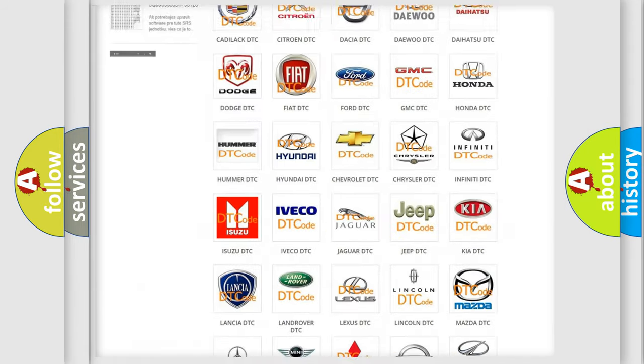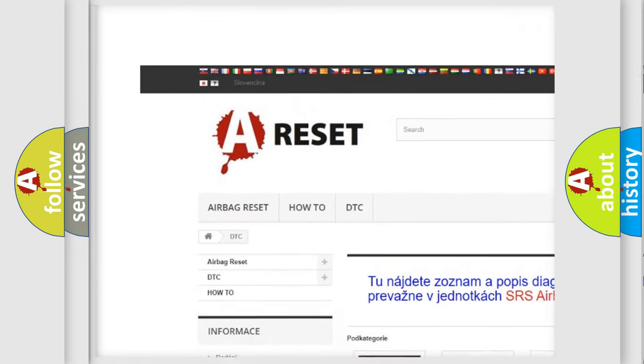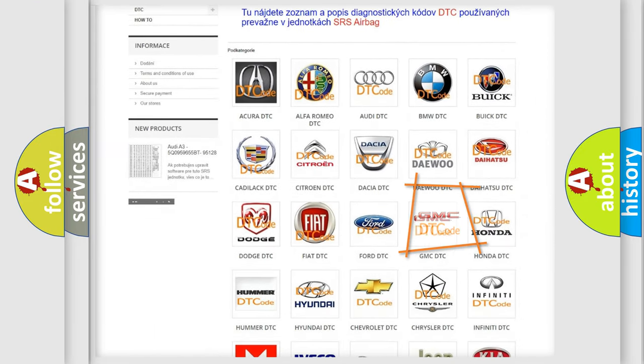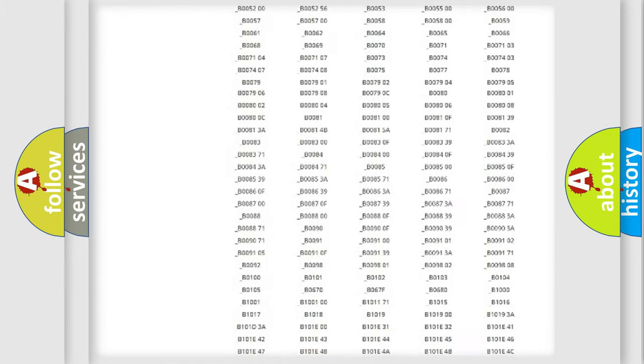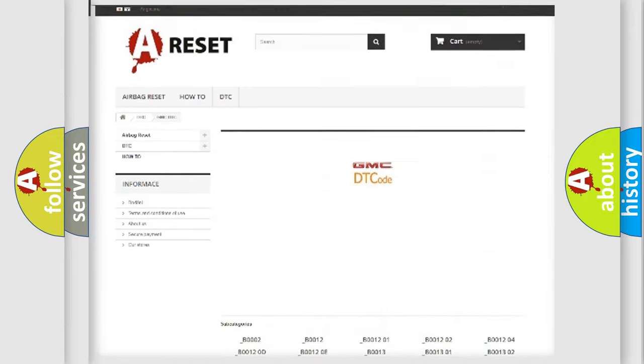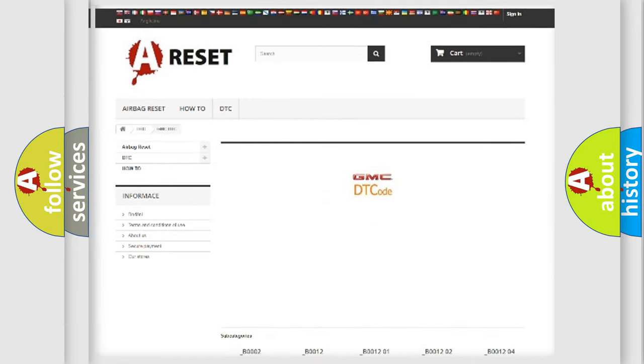Our website airbagreset.sk produces useful videos for you. You do not have to go through the OBD2 protocol anymore to know how to troubleshoot any car breakdown. You will find all the diagnostic codes that can be diagnosed in GMC vehicles, and also many other useful things.